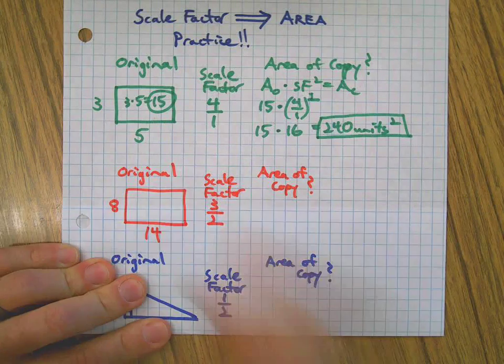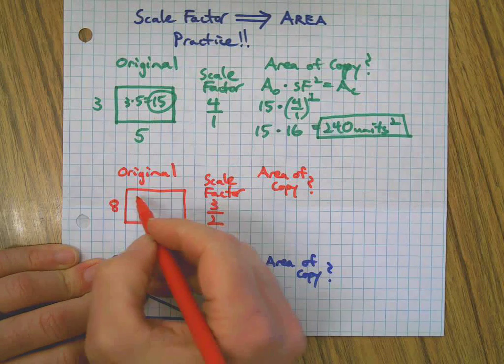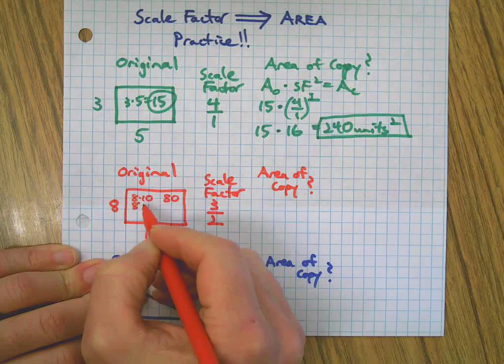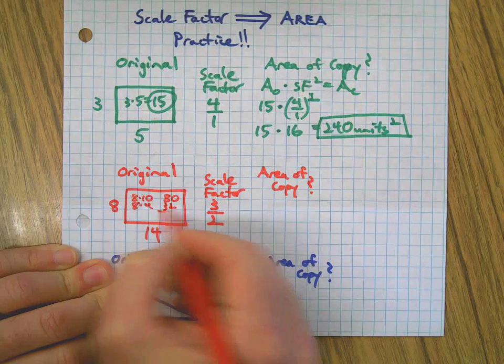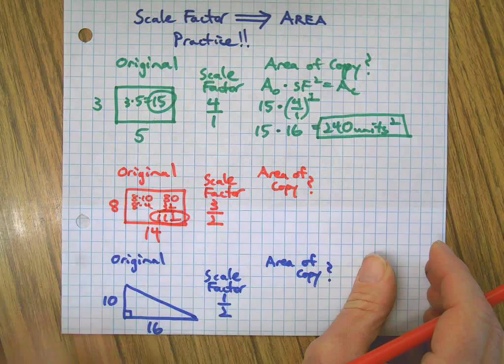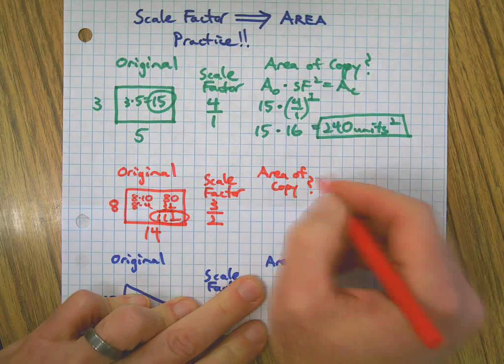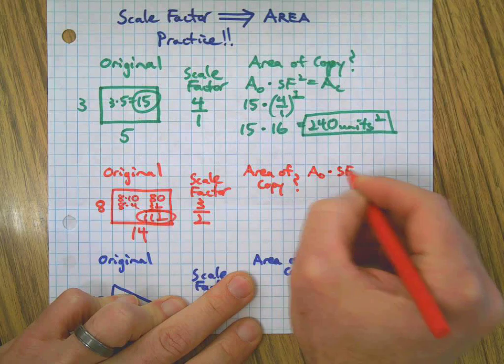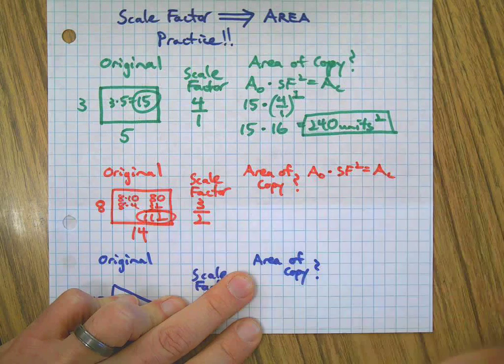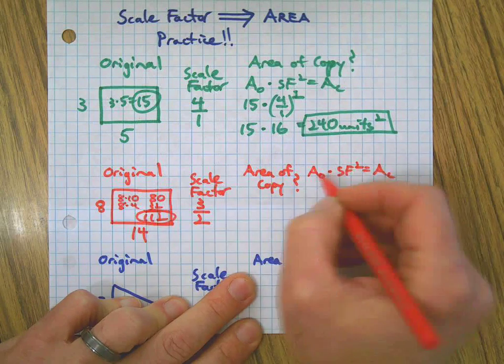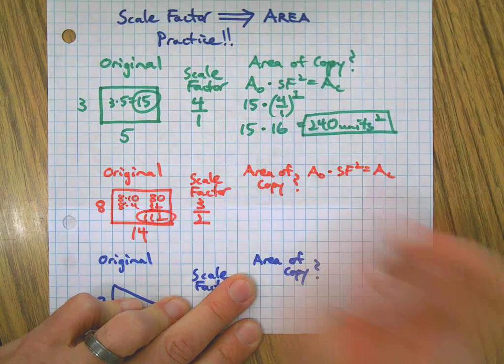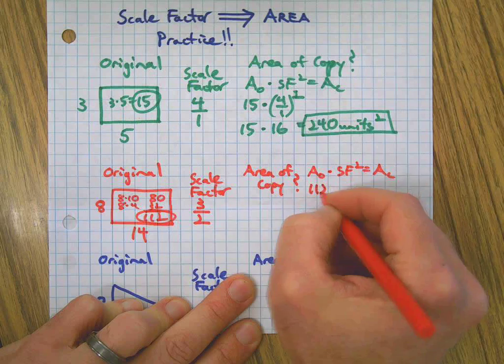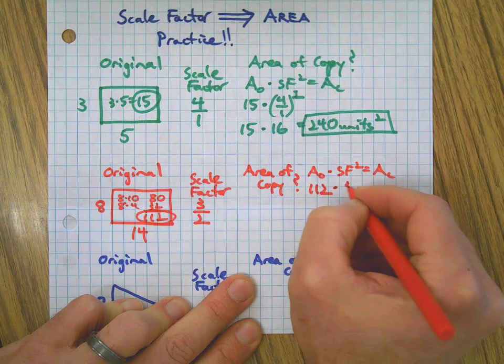Here we go. The original, 8 times 14, well that's 8 times 10 and 8 times 4, that's 112. Okay, so we got to calculate the original, but then we're just going to take area of the original times scale factor squared to get area of the copy. I like to write the formula down each time before I start because it just reminds me about what I'm doing and what it means.